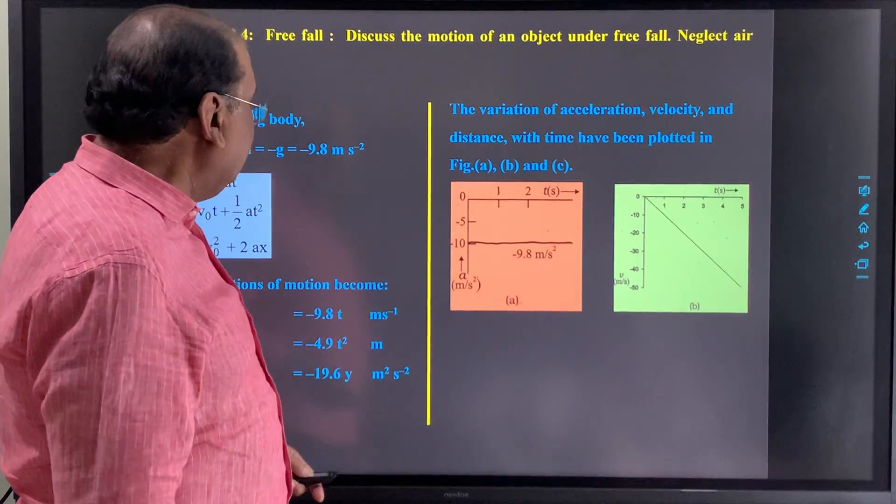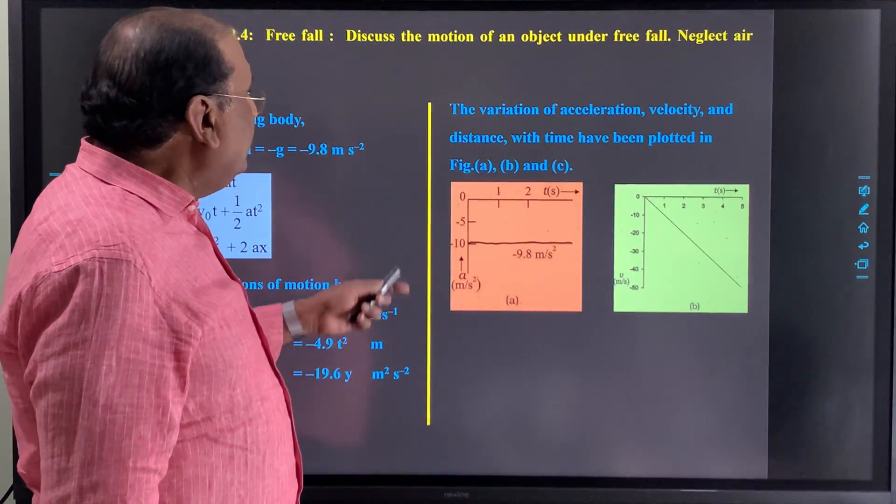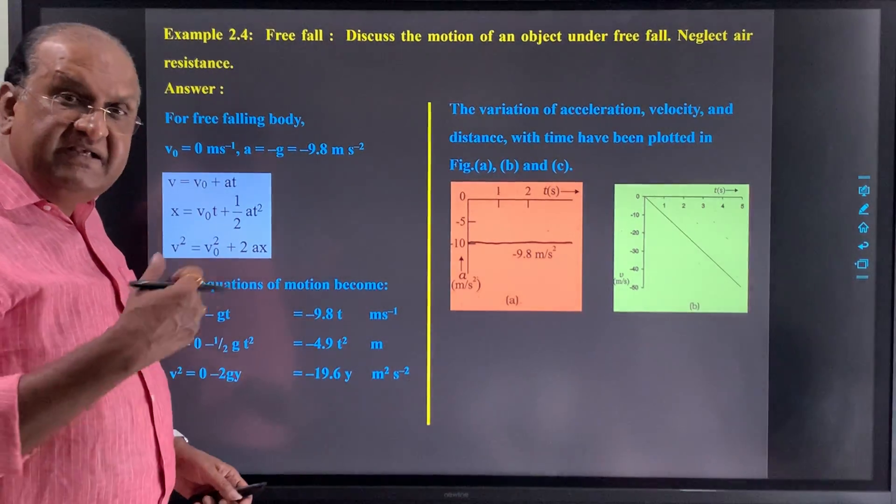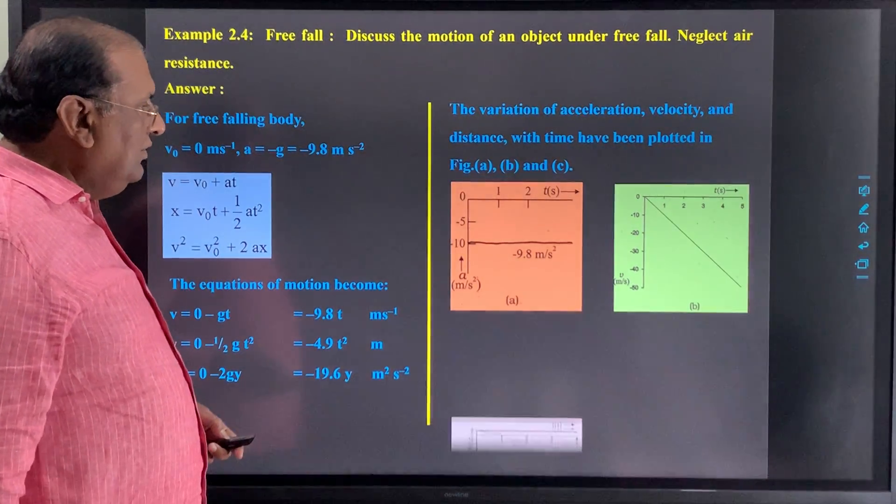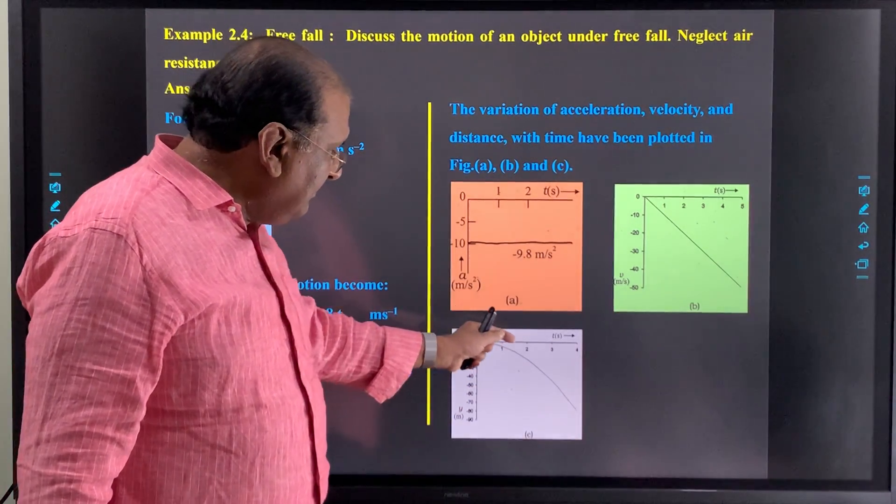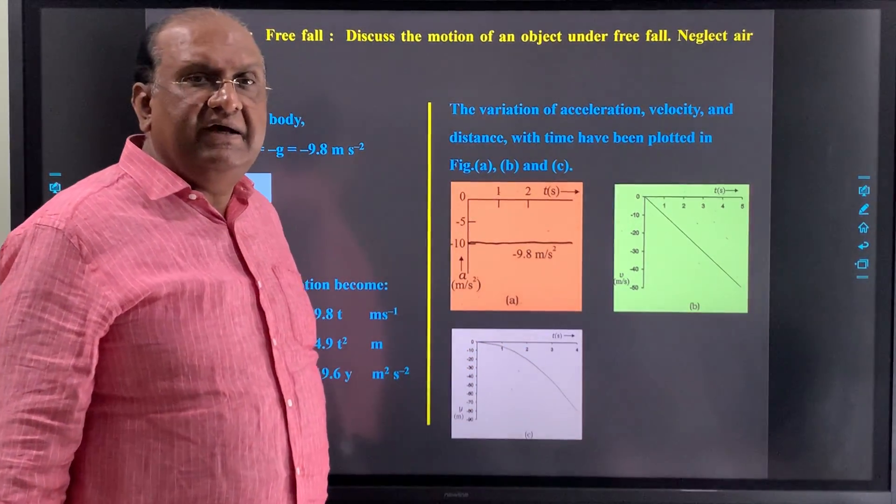Now for distance, y proportional to t square. So here the graph of y versus t will be parabolic type.